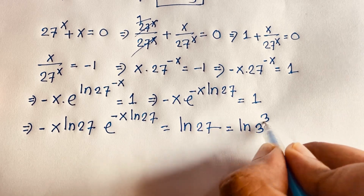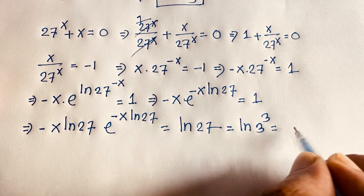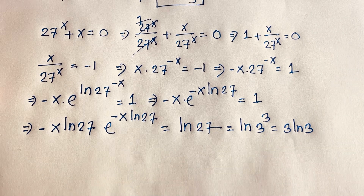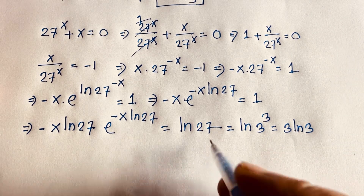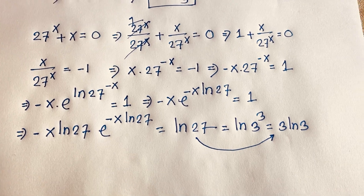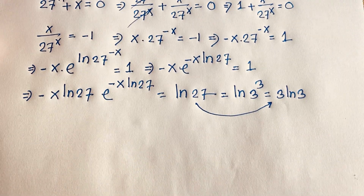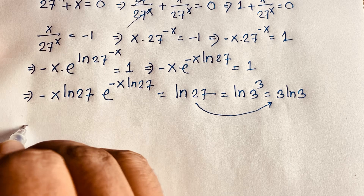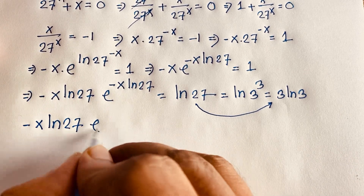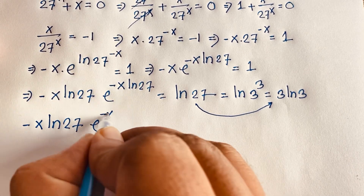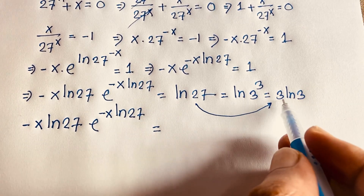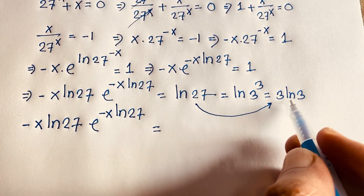Now, ln 27 equals ln(3^3), which equals 3 ln 3. So our equation becomes: minus x · ln 27 · e^(minus x · ln 27) equals 3 ln 3. I can rewrite 3 as e^(ln 3), so the right-hand side becomes ln 3 · e^(ln 3). This matches the Lambert W form perfectly.